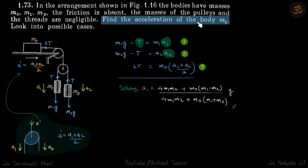In this problem we need to find the acceleration of body m1. Let's assume that to be a1. Now let's assume some tensions: T here, T here, so this will be 2T.